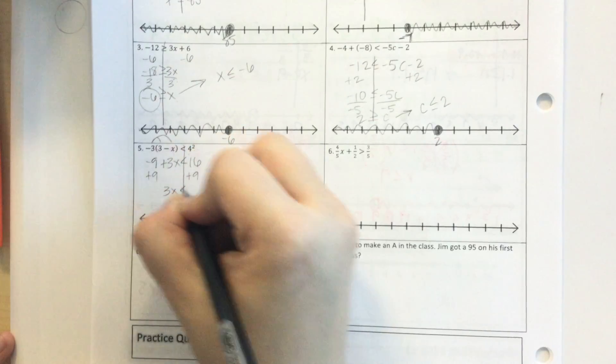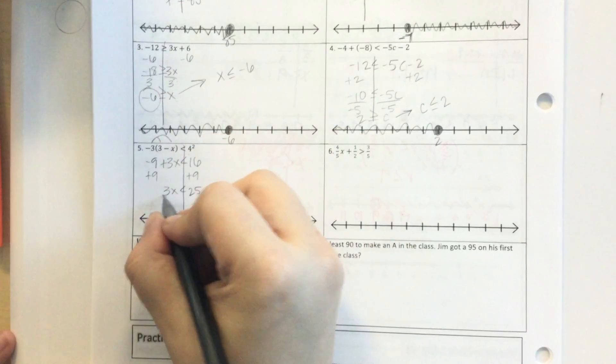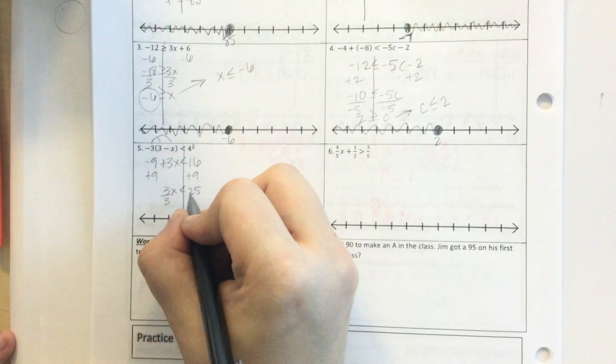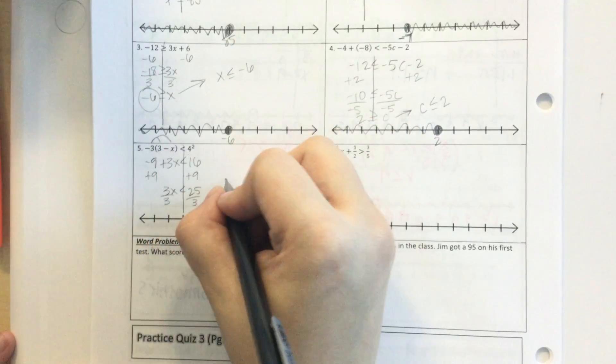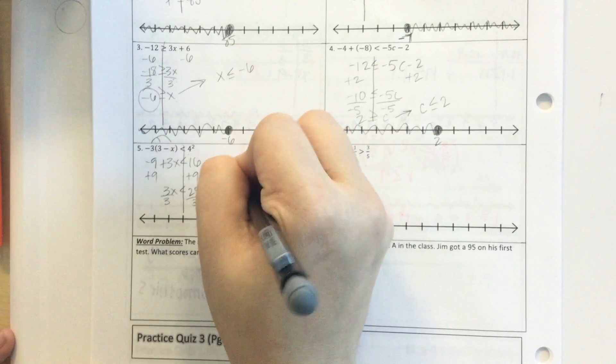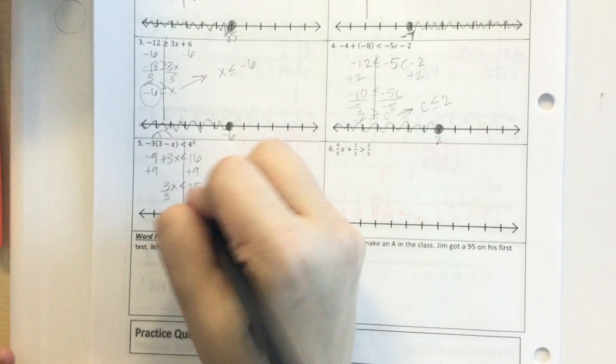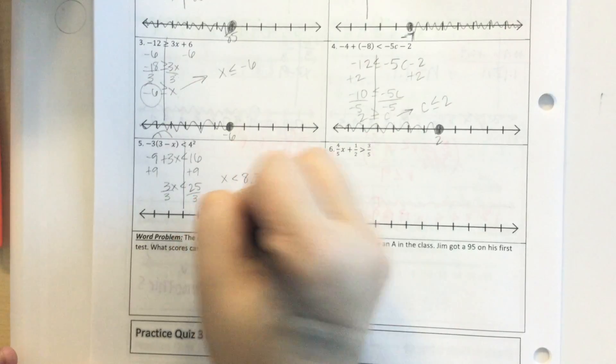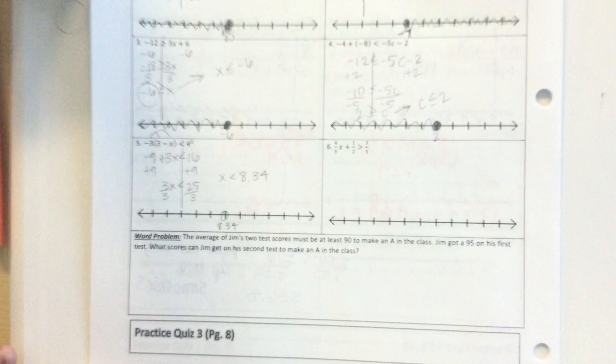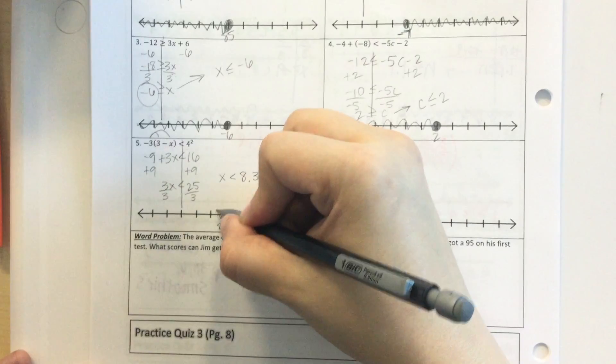Okay. So 3x less than 25. Divide by 3. 3x is less than 25 over 3. Or if you use your calculator, you'll find out it's 8.34. So I'm just going to put 8.34. Open circle because it's not or equal to. Going to the left. And that's it.